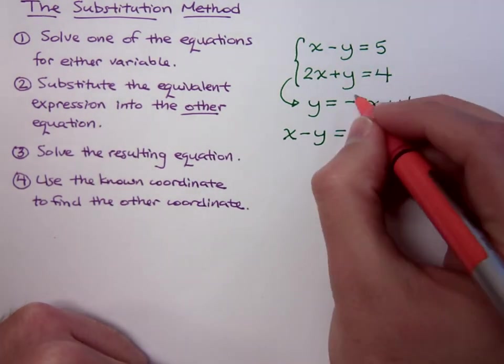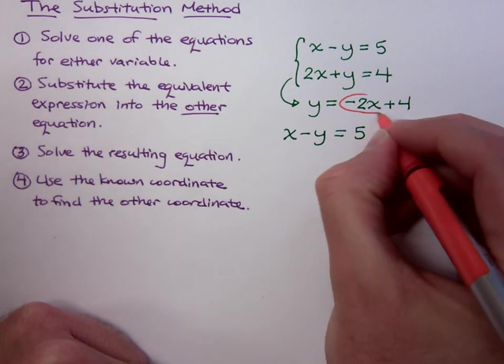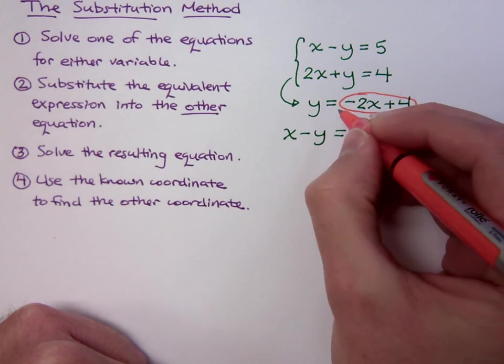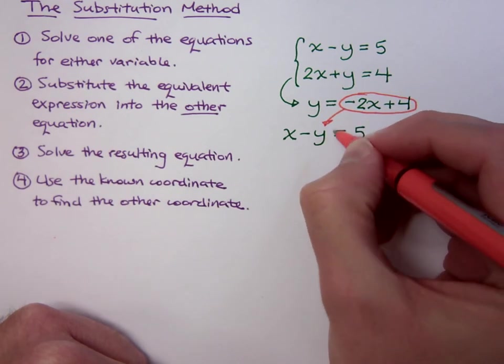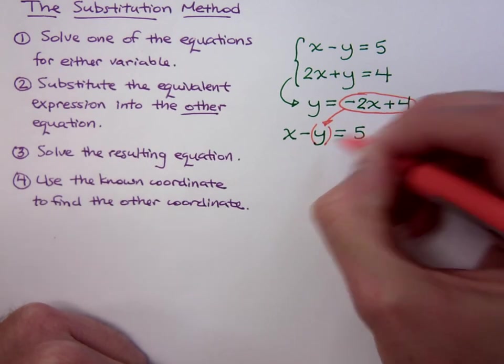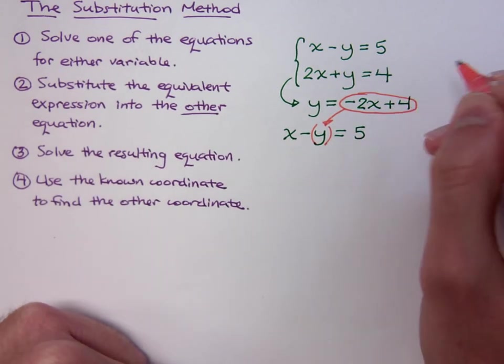I'm going to take this guy right here and instead of writing the y, I'm going to replace it with a negative 2x plus 4. So I'm going to replace just the y right here with what it equals, negative 2x plus 4.